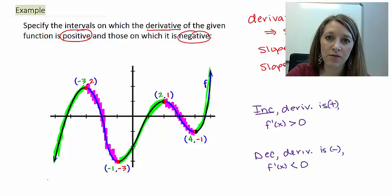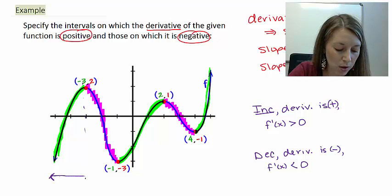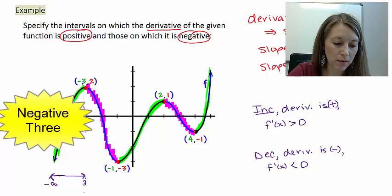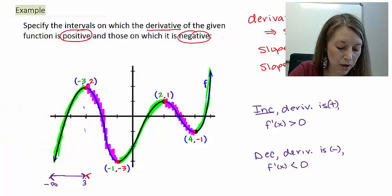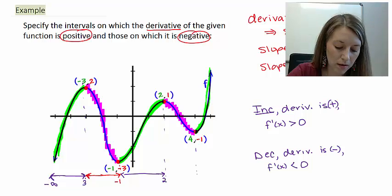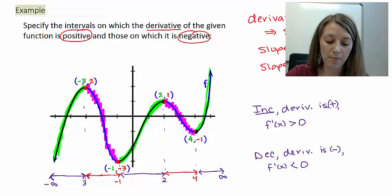My graph is increasing from the very left-hand side up until x equals 3, so from negative infinity to 3. Then it's decreasing from 3 to negative 1. Then it's increasing from negative 1 to 2. Then it's decreasing from 2 to 4. And then it's increasing from 4 all the way to positive infinity, the right-hand side of the graph.